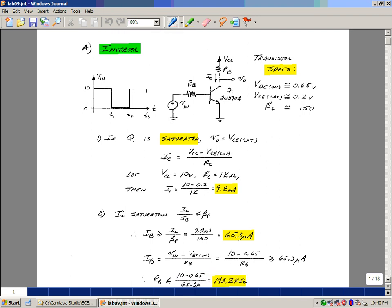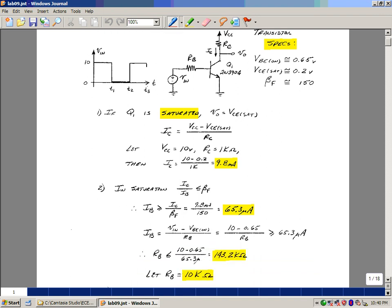If you recall from the course, to saturate a transistor we need to keep the ratio of IC to IB less than beta F. We can solve this for I sub B. It's I sub C divided by beta F. We need to be greater than or equal to that. In this case we have 9.8 milliamps and a beta F around 150, so we're looking at a base current that needs to be bigger than or equal to 65.3 microamps.